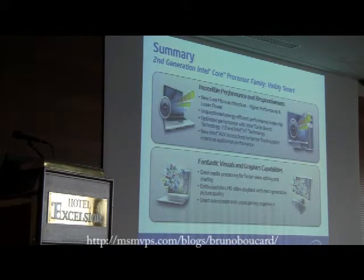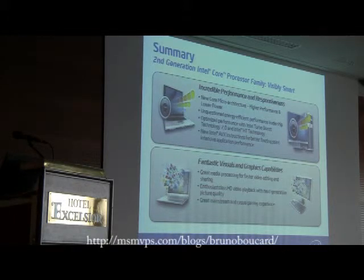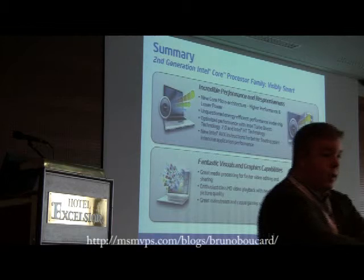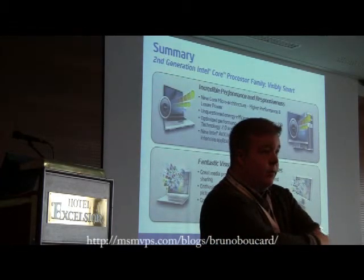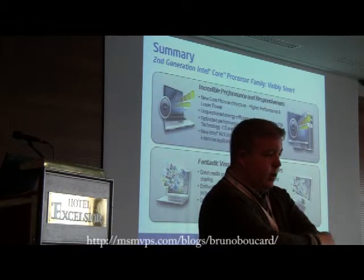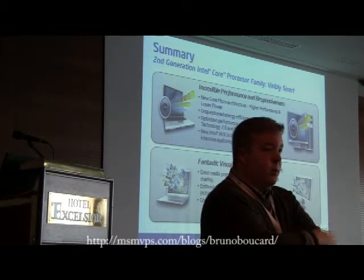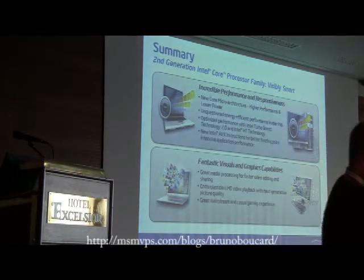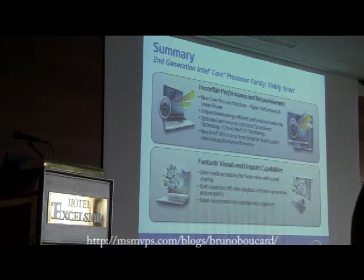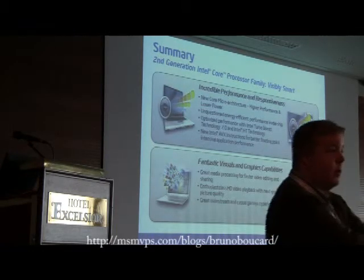Is that 12 execution units across i3, i5, and i7? The 12 execution units come with the HDG 3000, which is on the i3, i5, and i7 depending on the SKUs. The HDG 2000 has six execution units — so roughly half the performance.